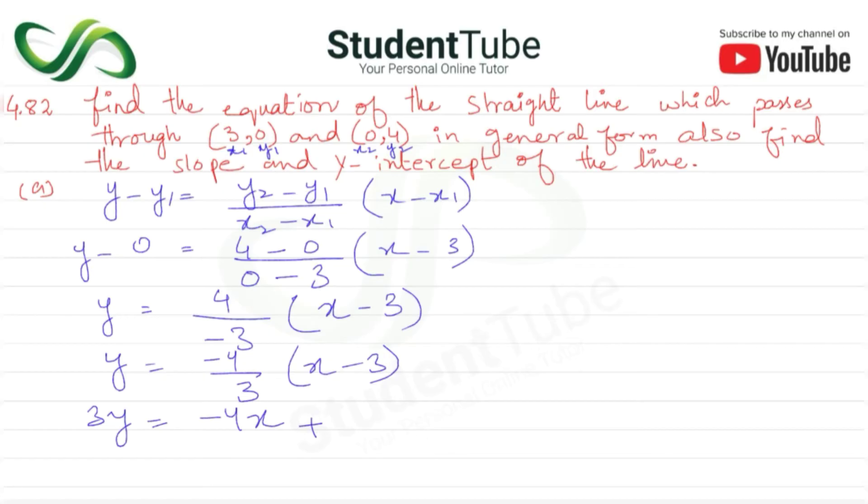So now we have 3y is equal to minus 4x plus 12. For the general form, the whole equation is equal to zero. So this becomes 3y plus 4x minus 12 is equal to zero.